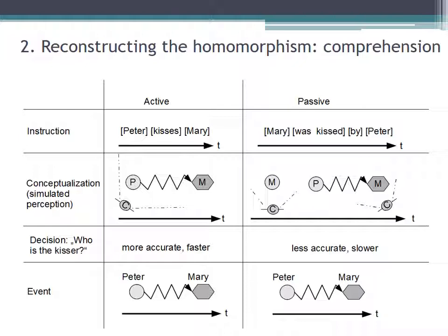When we look into the comprehension of active sentences, this works similarly. On the basis of the instruction, Peter kisses Mary, the interpreter can incrementally simulate a corresponding perception. And the perception is trivially iconic to how the event objectively unfolds.